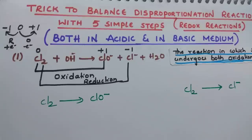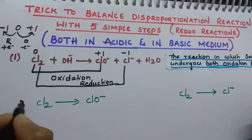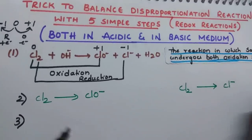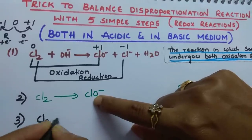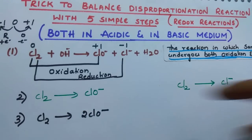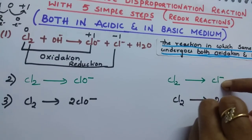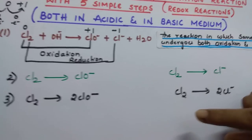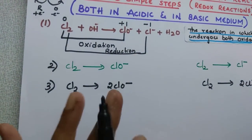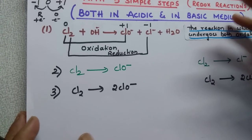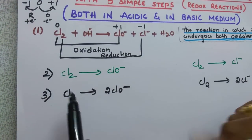Step 3: balance number of atoms. In the oxidation reaction, there are 2 Cl on the left and 1 on the right, so put 2 before ClO⁻. In the reduction reaction, Cl₂ has 2 Cl, so put 2 before Cl⁻. After that, balance the number of electrons. Some students feel difficulty while balancing the charge, so balance in the form of electrons — it will be easy.